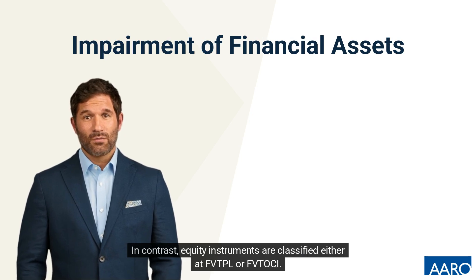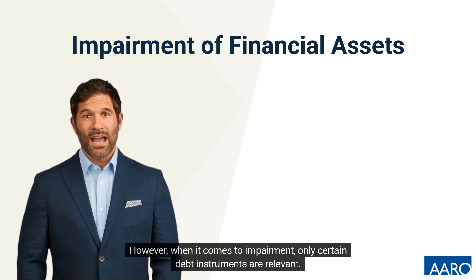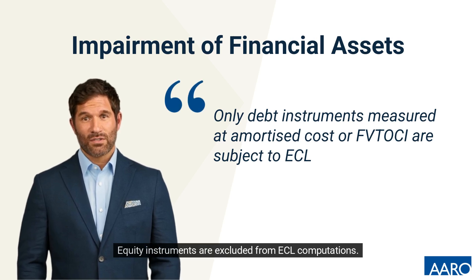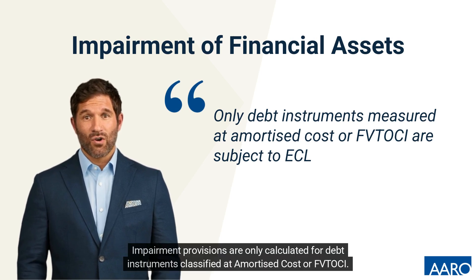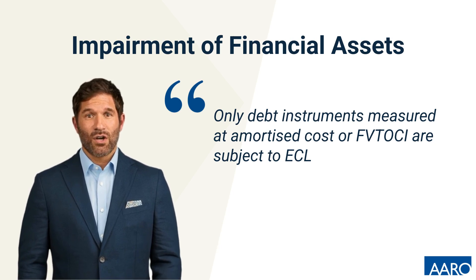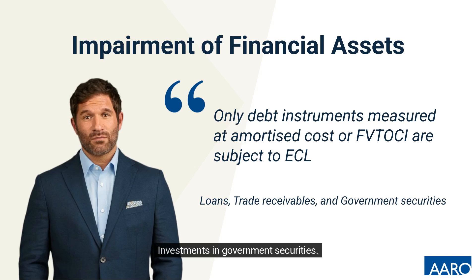In contrast, equity instruments are classified either at fair value through profit or loss or fair value through other comprehensive income. However, when it comes to impairment, only certain debt instruments are relevant. Equity instruments are excluded from ECL computations. Impairment provisions are only calculated for debt instruments classified at amortised cost or fair value through other comprehensive income. These may include loans to customers, trade receivables, and investments in government securities.